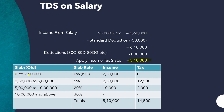Applying old income tax slabs to ₹5,10,000: income from ₹0 to ₹2,50,000 is taxed at 0%, so tax is nil. Income between ₹2,50,000 and ₹5,00,000 is ₹2,50,000, taxed at 5%, giving a tax of ₹12,500.